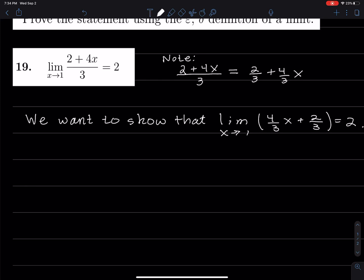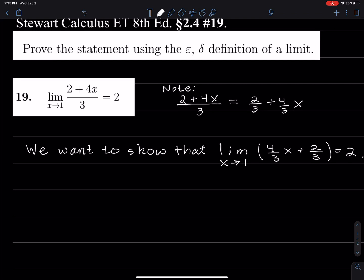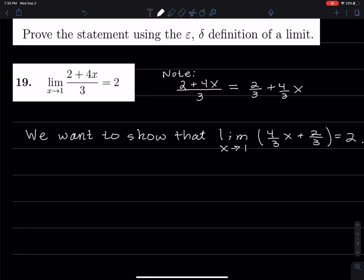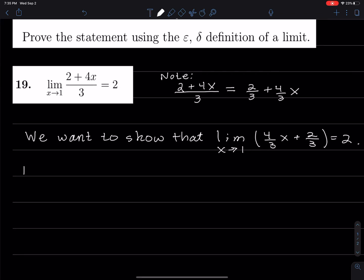So when you find the limit, because it's continuous, you're allowed to just plug in 1 and you get the limit. But we're trying to show that this is true using the epsilon-delta definition of limit. So here is our proof.